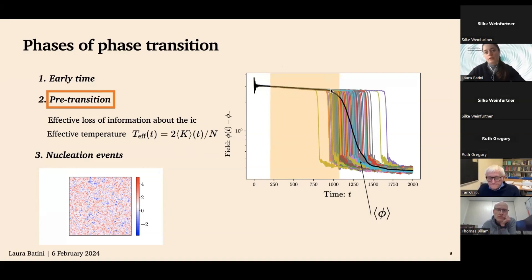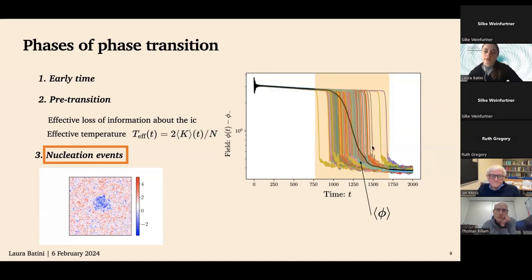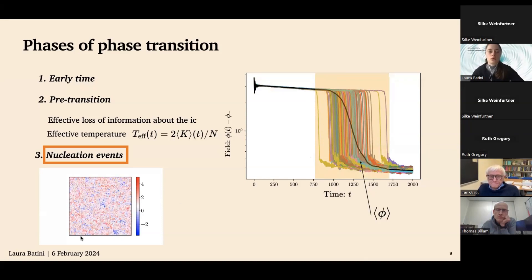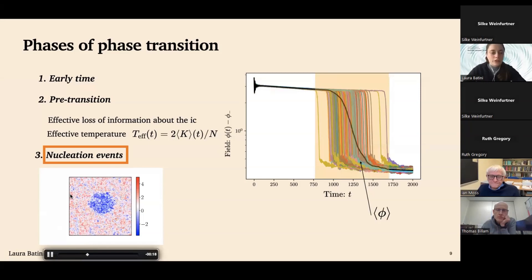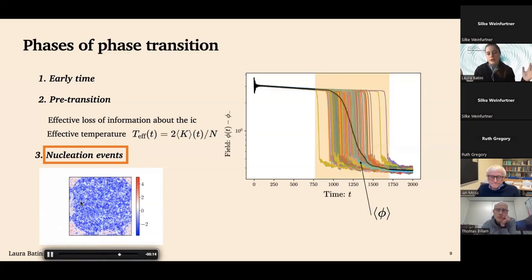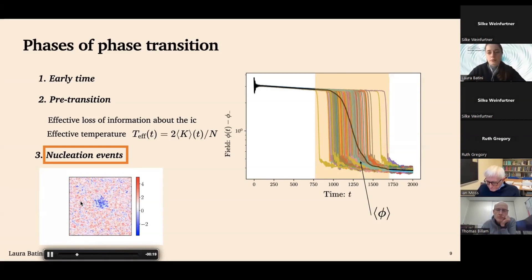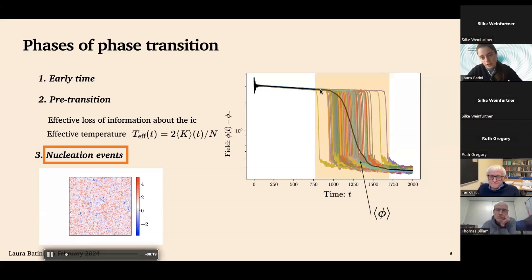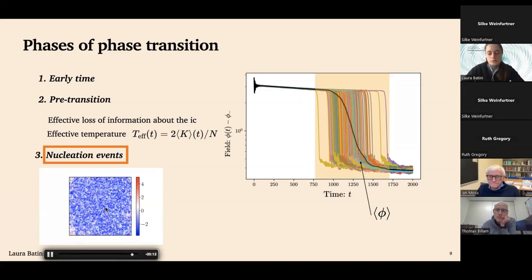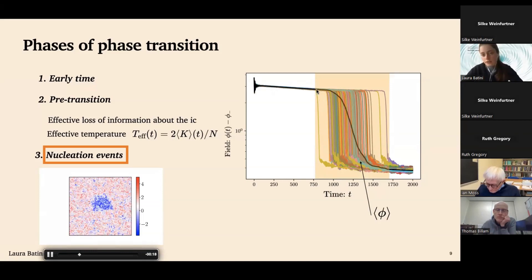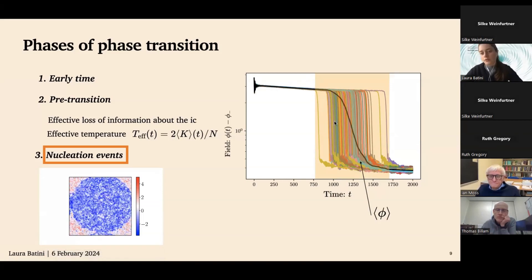In the pre-transition phase, the system effectively loses memory of the initial conditions, and we can define an effective temperature based on the mean kinetic energy per degree of freedom — local in time and applicable out of equilibrium — which will be useful later. We then reach the transition itself, where individual simulation runs show nucleation events, visible as bubbles expanding in 2D snapshots. Multiple bubble productions can be observed on larger grids. Averaging over runs, the single-shot bubble nucleation information is lost, but the phase transition from false to true vacuum is still clearly represented.